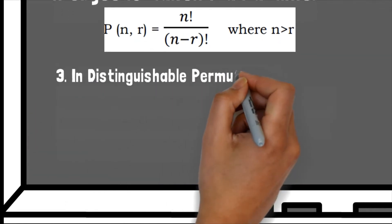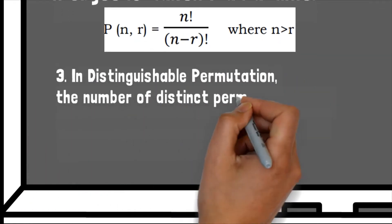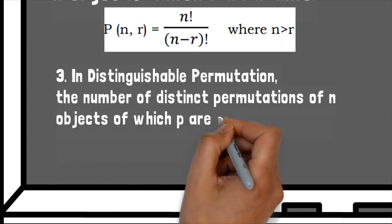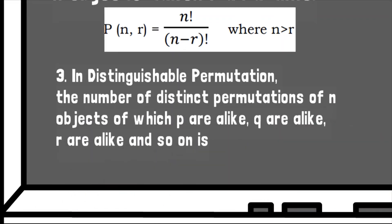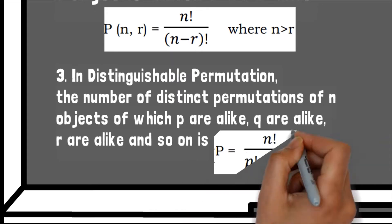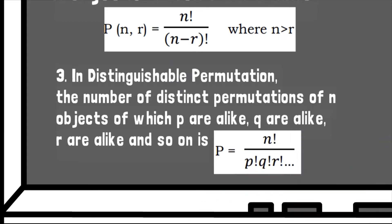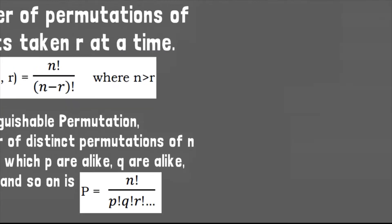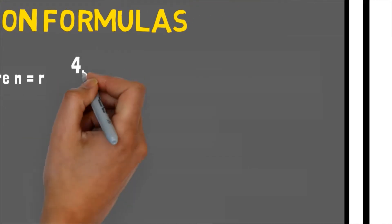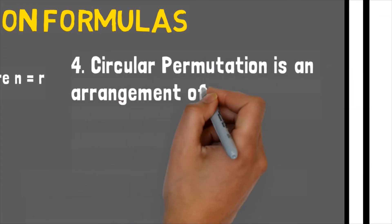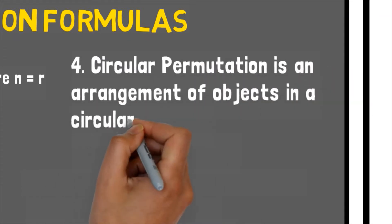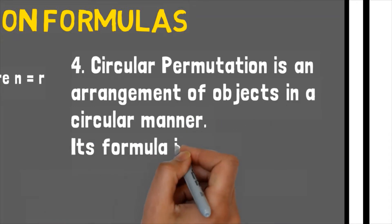For distinguishable permutations, where the number of distinct permutations of n objects of which p are alike, q are alike, r are alike, and so on, the formula is n factorial divided by p factorial times q factorial times r factorial, and so on. Lastly, in circular permutations, where the arrangement of objects is in a circular manner, we use the formula (n minus 1) factorial.